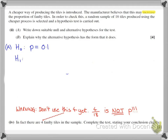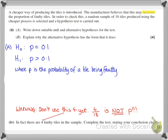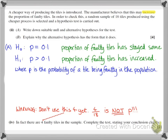Our alternative hypothesis, notated H₁, is that p > 0.1. We won't get full marks for writing down the hypotheses unless we say what p is. In this case, p is the probability of a tile being faulty in the population. I'll also jot down what those hypotheses mean in words to help write the conclusion later: p = 0.1 means the proportion of faulty tiles has stayed the same; p > 0.1 means the proportion of faulty tiles has increased.